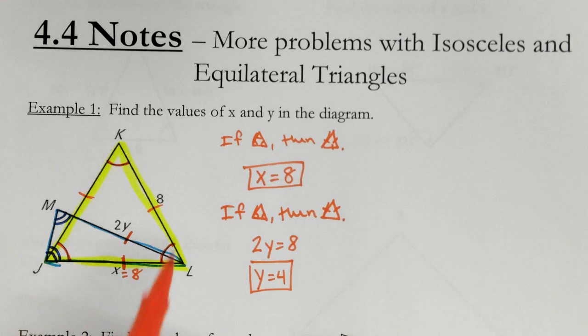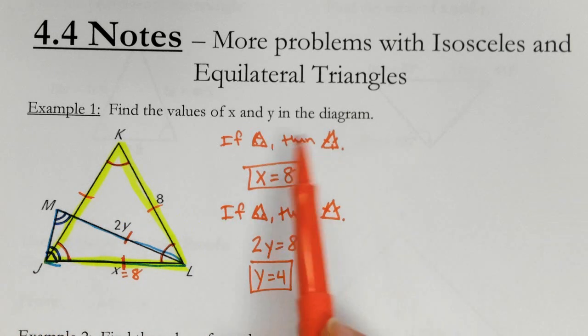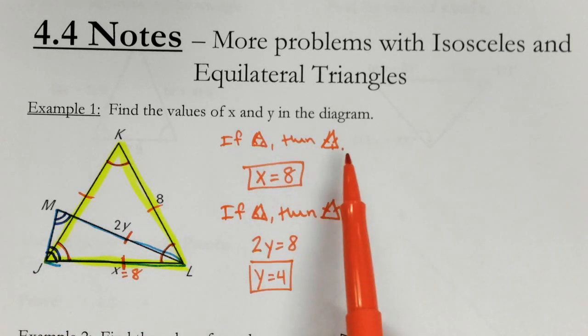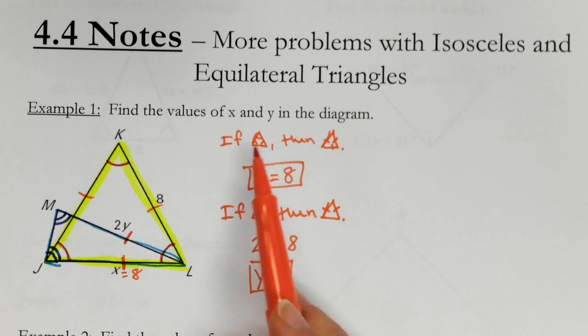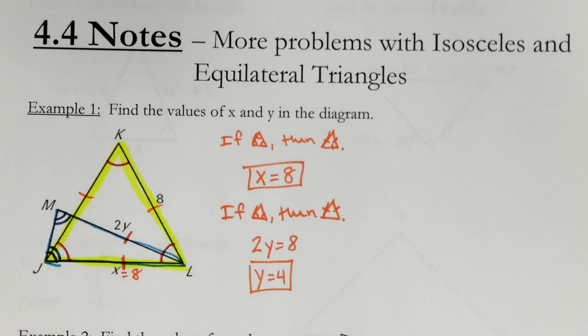So this one looks a lot more complicated than it is. It was just if two angles are congruent, then three angles, then three sides. If two angles, then two sides. So we just had to kind of figure out which triangles we were looking at.